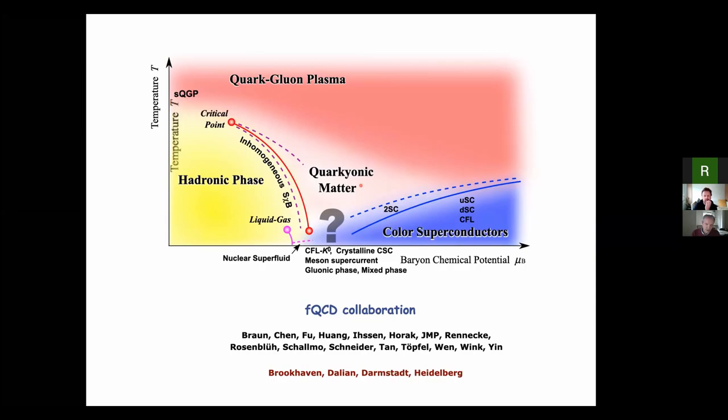This is our work on the phase structure of QCD with functional methods. I'm speaking on behalf of the FQCD collaboration, whose current members are located at Brookhaven, Dalian, Darmstadt, and Heidelberg. It's a larger initiative to really crunch down quantitatively functional renormalization group flows for QCD at large density.